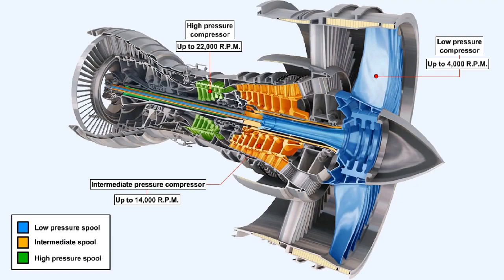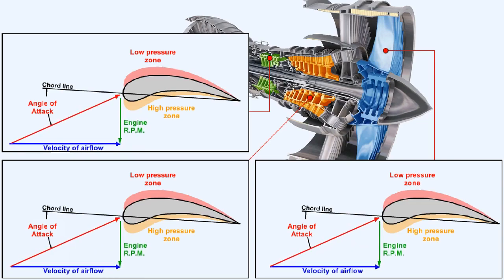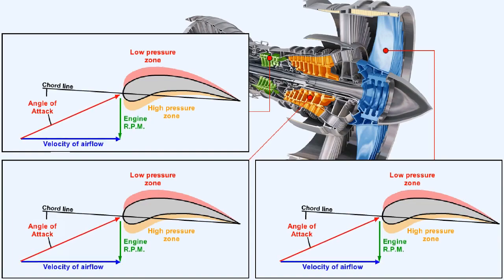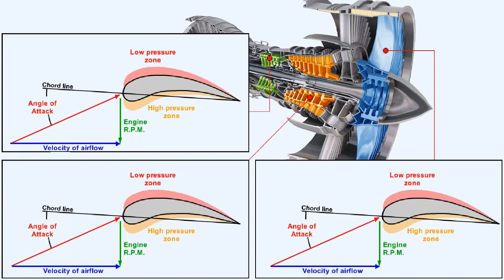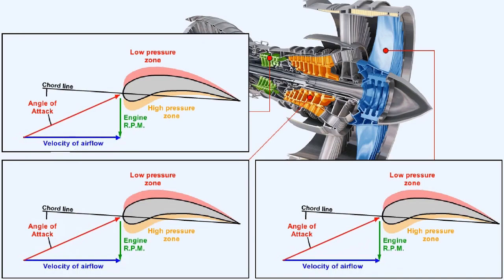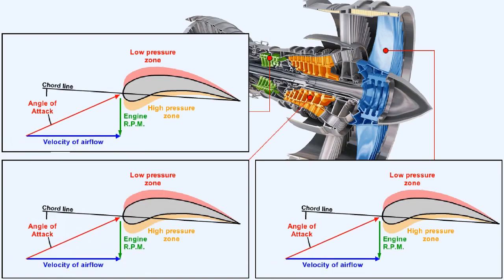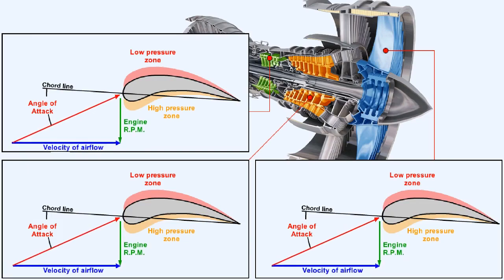The compressor, the turbine, and the shaft upon which they are both mounted form a spool. By designing the engine so that, upon closing the throttle, the speed of the low pressure spool falls off more rapidly than the intermediate pressure and high pressure spools, it can be arranged that the optimum shape of the vector diagram relating to compressor blade angle of attack can be maintained over a much greater engine RPM range, thus greatly reducing the chance of compressor stall.